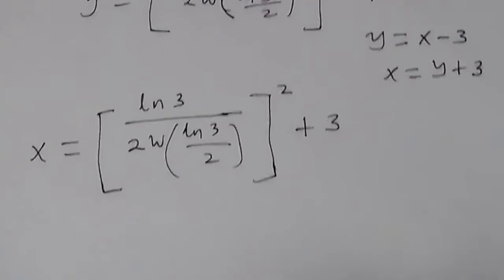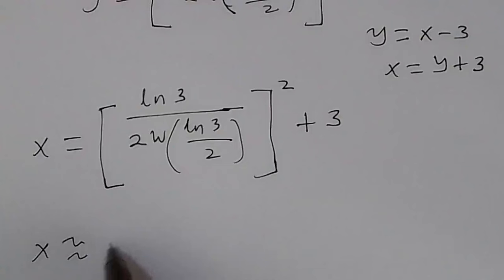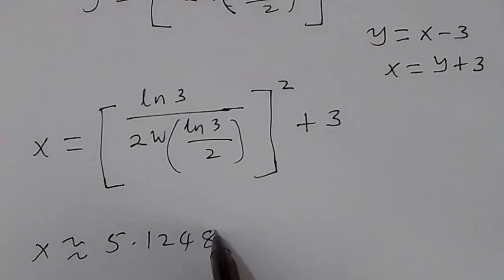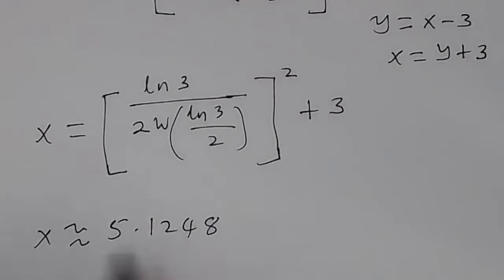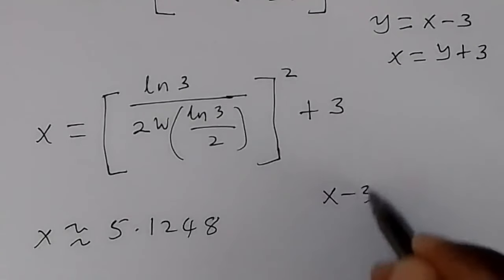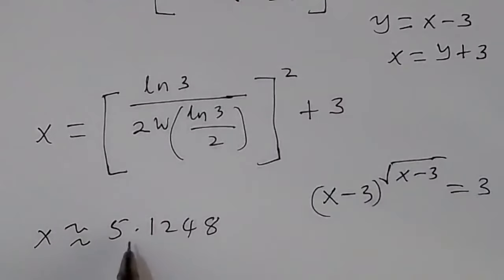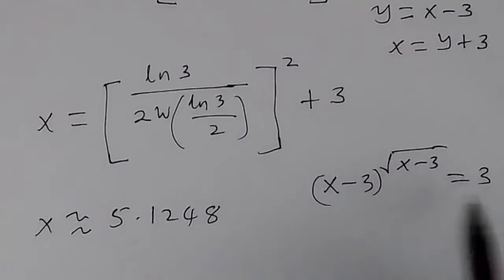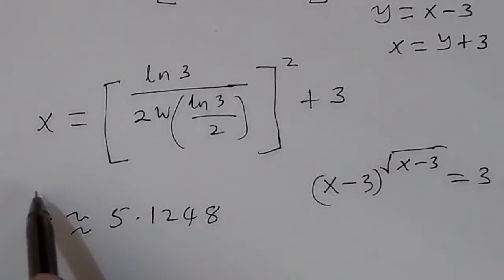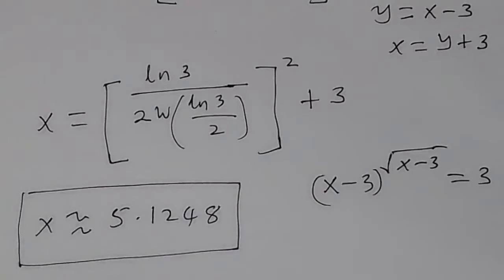From the calculator, x is approximately equal to 5.1248. This is the solution for x that satisfies the equation (x minus 3) raised to root (x minus 3) equals 3. If you put this value in, you will find that the left-hand side equals the right-hand side. Thank you for watching — subscribe to my channel and turn on the notification bell to get new updates.